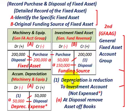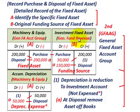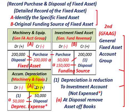Key takeaways: depreciation is a reduction to the investment account. Any accumulated depreciation is a reduction to your investment account — it doesn't go against any depreciation expense. At disposal, remove whatever the carrying amount is for machinery and equipment, remove any accumulated depreciation, and remove your investment in fixed assets.